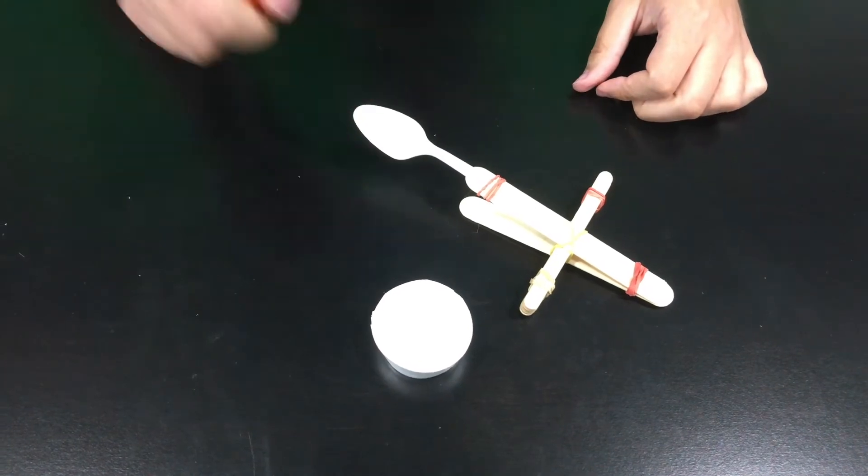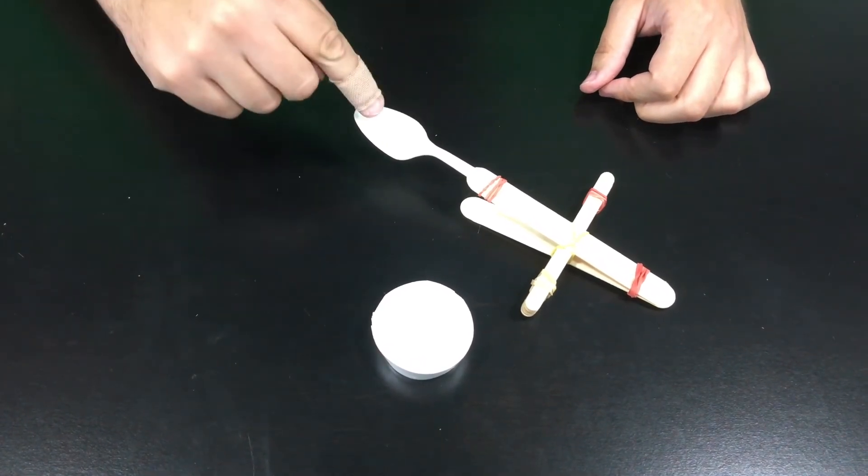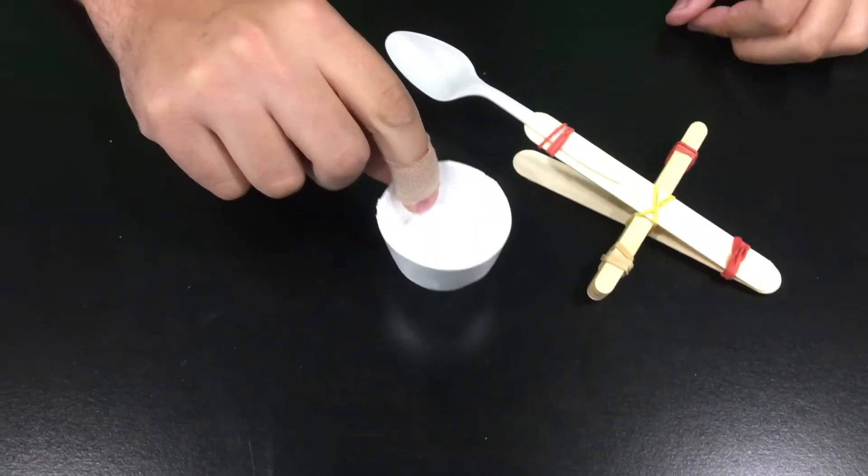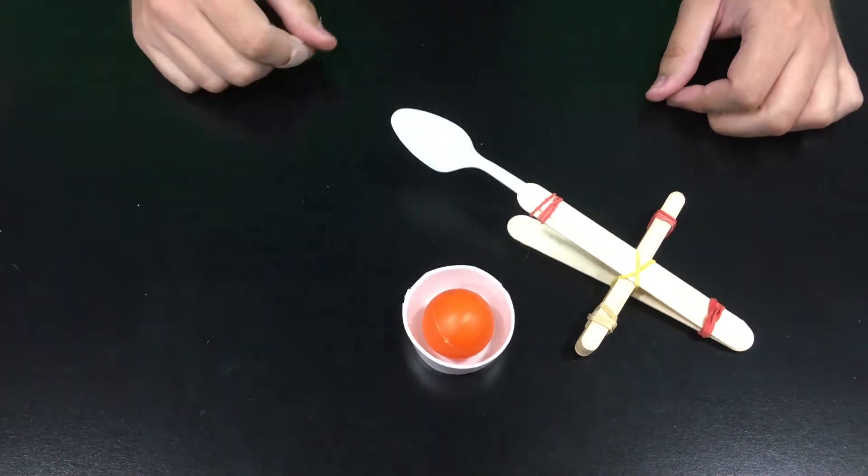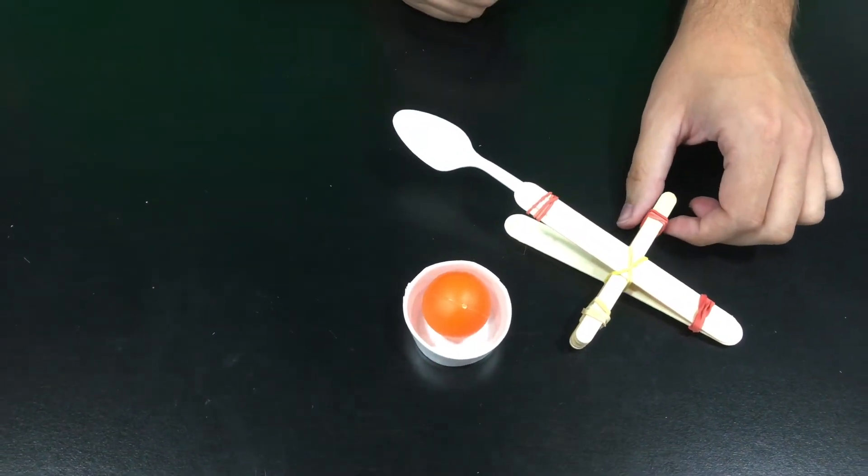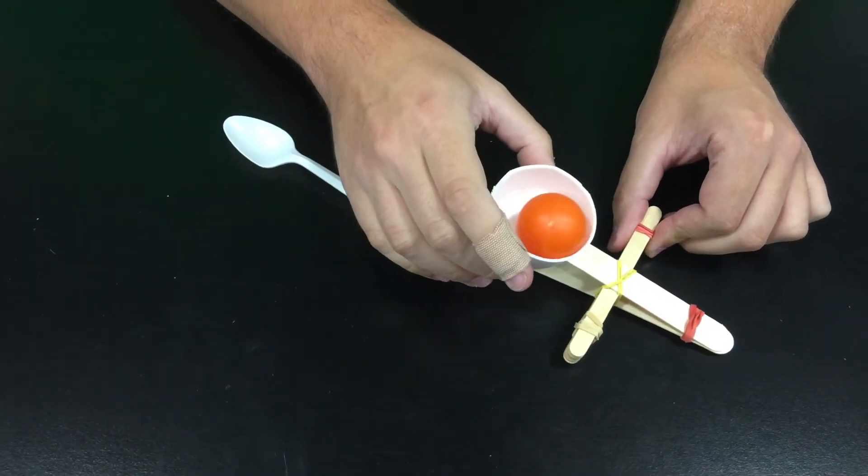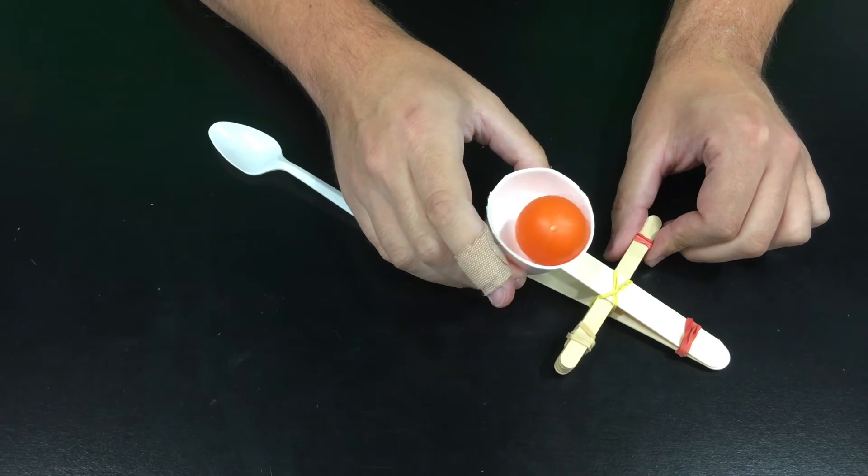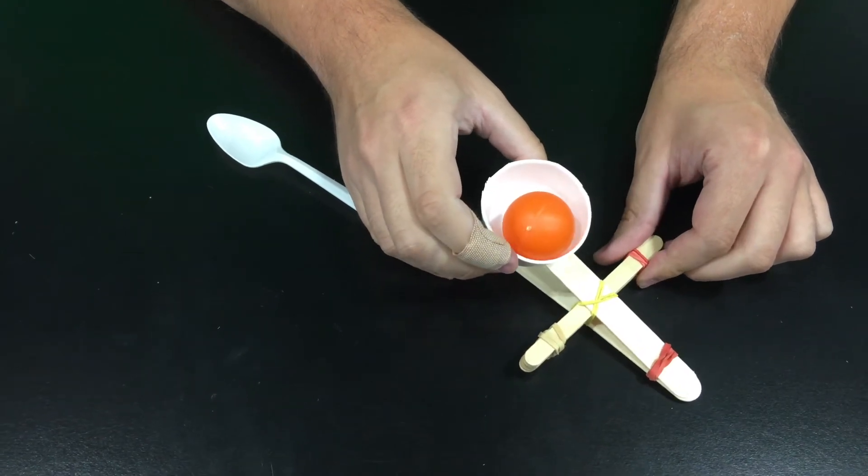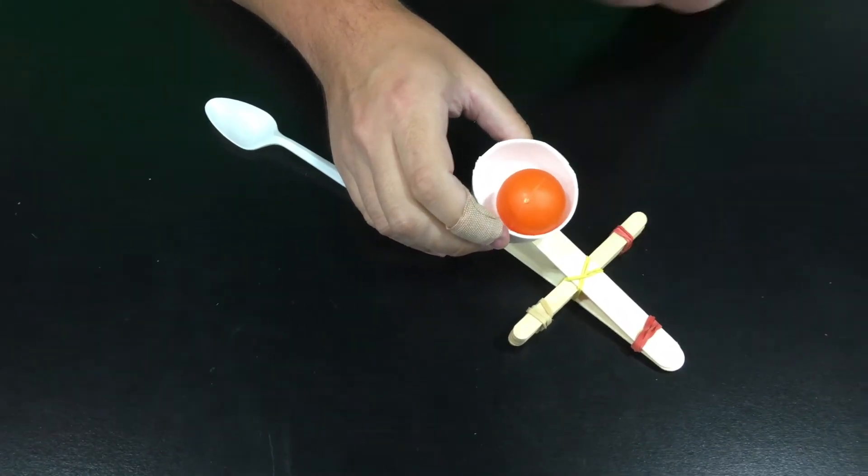Students, if you would like to try an extension, you can replace the spoon with this little piece of a styrofoam cup, putting the ping pong ball in the styrofoam cup and attaching it to the tongue depressor with some tape on the bottom. See if that makes a difference in the height or distance that your ping pong ball will be launched.